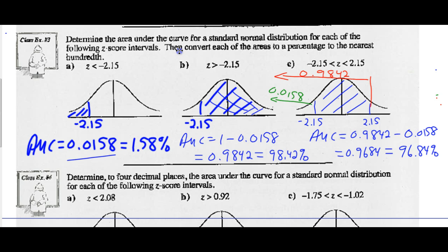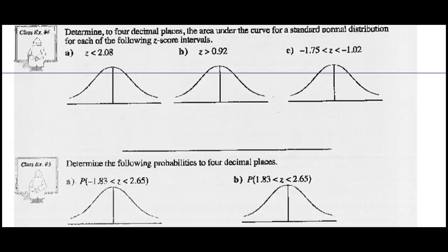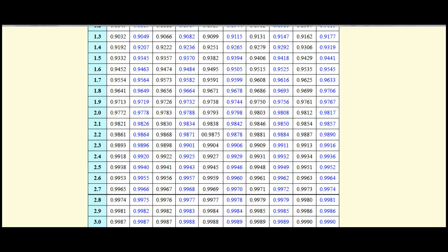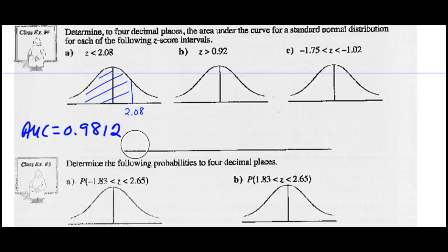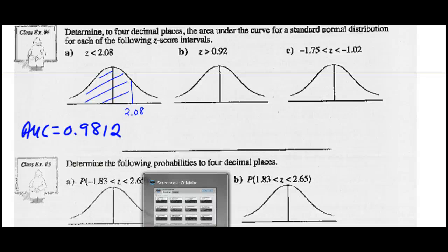Example 4: determine to four decimal places the area under the curve for each Z-score interval. For a Z-score of positive 2.08: looking that up on our chart, Z = 2.08 has an area under the curve of 0.9812. So this area under the curve is 0.9812.